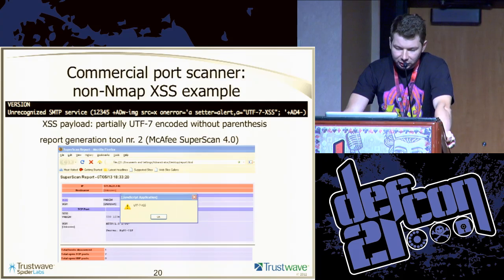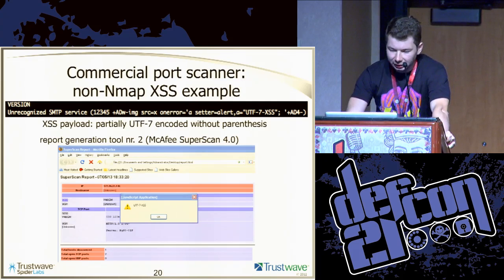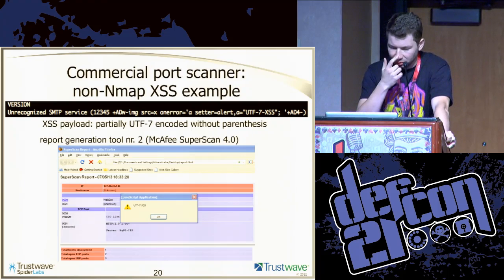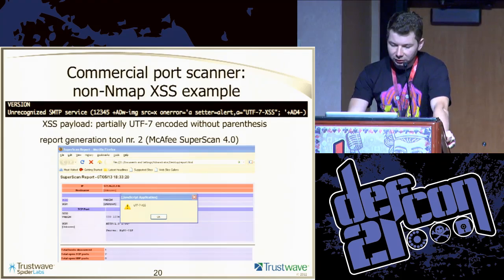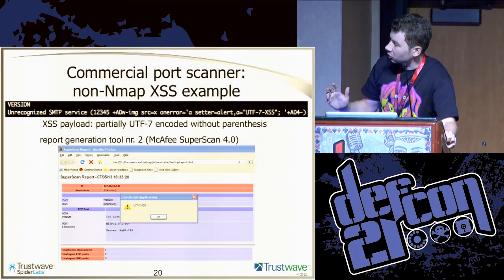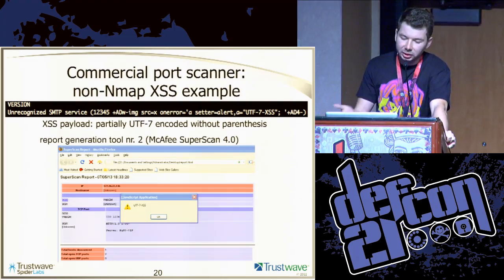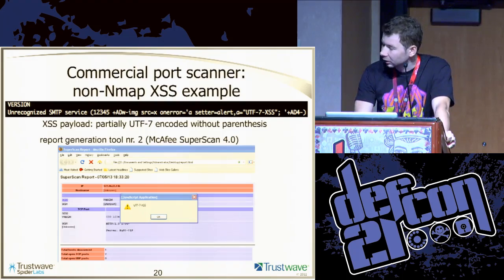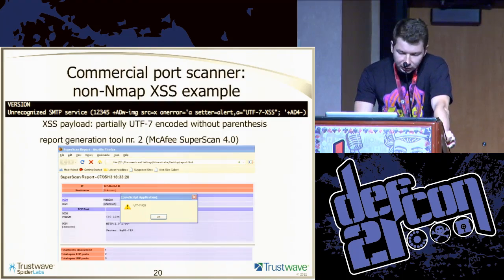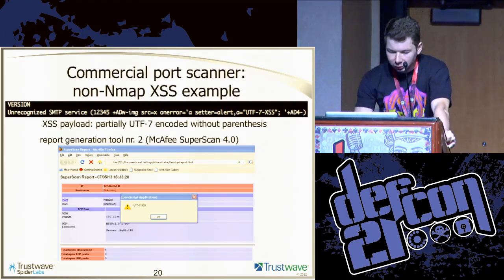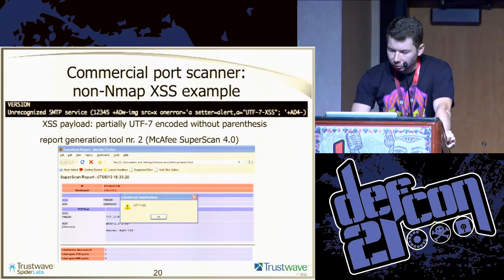You can also exploit, for example, the McAfee SuperScan. It was fixed a few days ago. But basically, if anyone scans your system with this particular tool and later generates a report, you will also be able to inject JavaScript code into their browser context. Then you can use BeEF or any other tool for post-exploitation — it really depends on what you want to do.